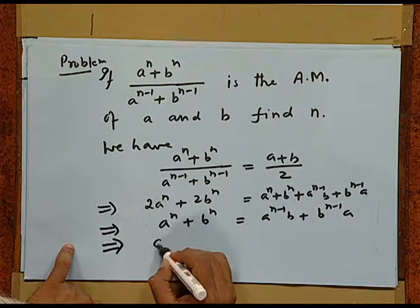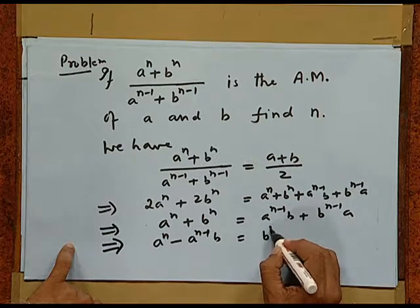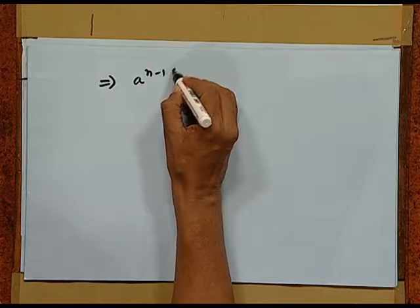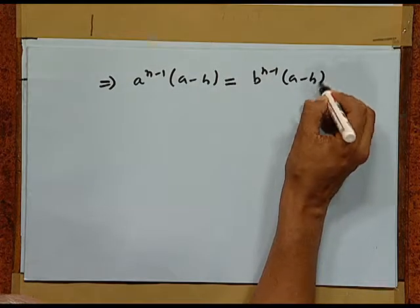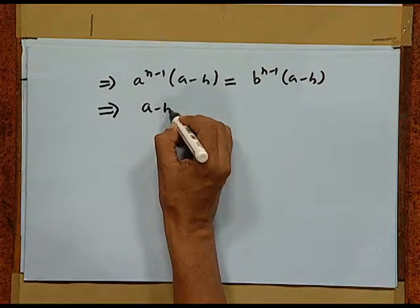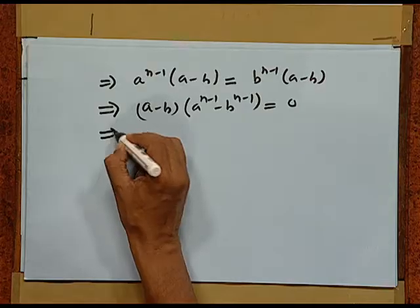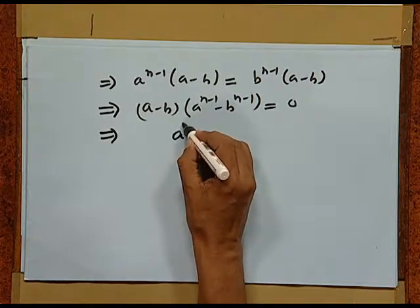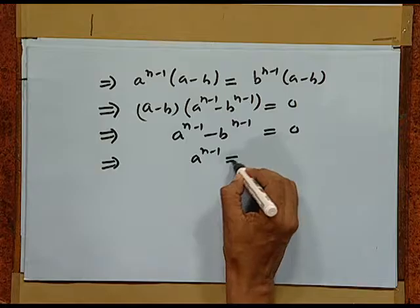This implies a to the n minus a to the n minus 1 times b is equal to b to the n minus 1 times a minus b to the n. That implies a to the n minus 1 times a minus b is equal to b to the n minus 1 times a minus b. That implies a minus b times a to the n minus 1 minus b to the n minus 1 equals 0. We can safely assume a is not b because a and b are distinct. This implies we can cancel a minus b both sides. So, we get a to the n minus 1 minus b to the n minus 1 equal to 0. That makes a to the n minus 1 is equal to b to the n minus 1.